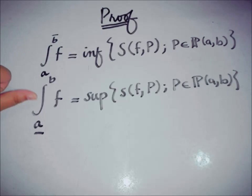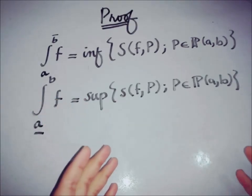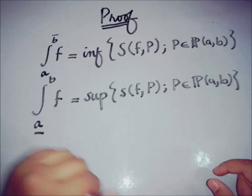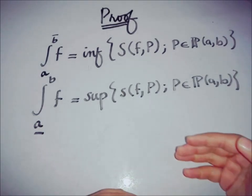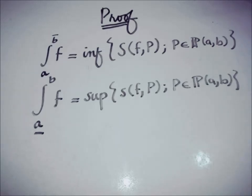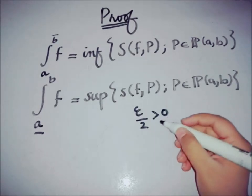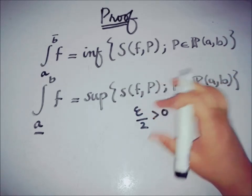Now we are going to show the relation between the upper Riemann integral and the lower Riemann integral. First, we will consider the relation between the infimum and the supremum. The supremum is the least upper bound, so if we subtract any positive number from the supremum, there must exist a number from the set that exceeds it. Let's take a positive number epsilon over two, greater than zero.